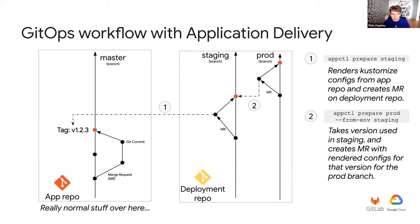To make things more visual — these are diagrams of your two Git repositories for the whole workflow. On the left, the application repository is a normal repository where you have commits, merge requests, and you tag things. It contains your source code and templates for your Kubernetes configurations. When you run `appctl prepare staging`, it creates a merge request on the staging branch of the deployment repository using the Kubernetes configurations from the last tag you created. Once you merge that merge request, you can run `appctl apply staging` to deploy. When you run `appctl prepare prod --from-env staging`, it creates a merge request on the production branch using the version currently in staging, and once merged you can apply it.